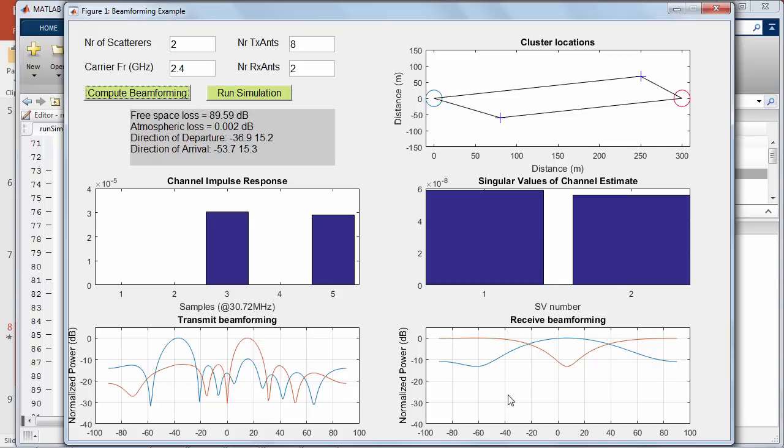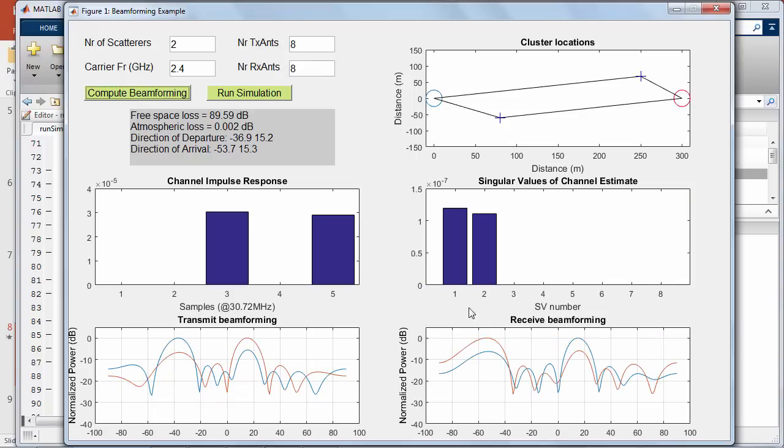The view on the receiver side is hard to interpret with only two antennas, so let's increase the number of antennas to eight. Now you can clearly see the energy being picked up from the two directions corresponding to the scatterers, minus 54 and plus 15 degrees.